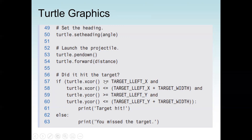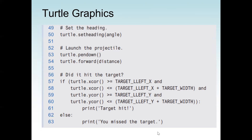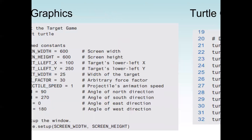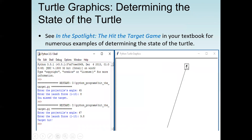Now we check whether it hit the target. The condition is: if turtle.xcor() >= target_left_x and turtle.xcor() <= target_left_x + target_width and turtle.ycor() >= target_left_y and turtle.ycor() <= target_left_y + target_width, then we print 'You hit the target!' Otherwise we say the target was missed. In our output, we can see the arrow hitting the target based on the values given.